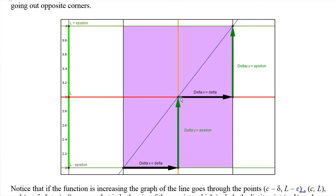If it's an increasing function, it will go out the lower left and upper right, whereas the decreasing function is going to go out the upper left and the lower right. But let's just take this example here. The other one works very similarly.